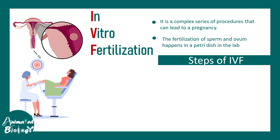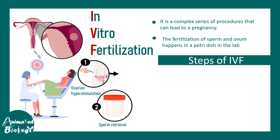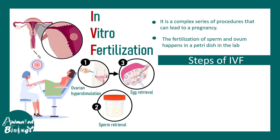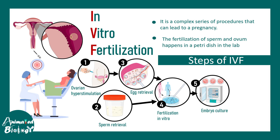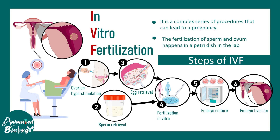Here are the steps of in vitro fertilization. First, ovarian hyperstimulation is done. Then sperm retrieval and egg retrieval is done from the respective donors. These gametes are combined in vitro in a petri dish — that is known as fertilization in vitro or IVF. Then the embryo is cultured in an incubator and a good embryo is transferred back to the uterus.